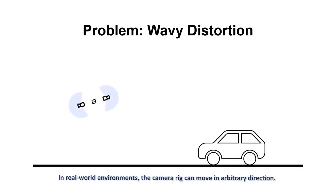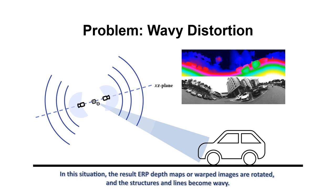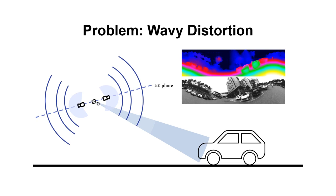In real-world environments, the camera rig can move in arbitrary direction. In this situation, the result ERP depth maps or warped images are rotated, and the structures and lines become wavy. These visual artifacts can lead to failures in visual scene understanding.